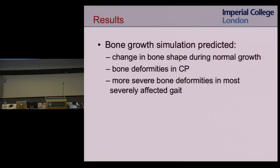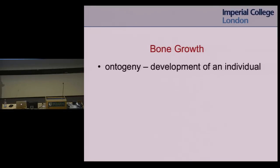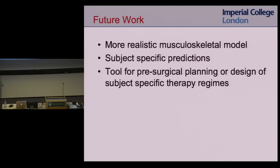We saw that in cerebral palsy walking, we would predict bone deformities. And the more severe the gait in that fourth child, we predicted higher, more severe bone deformities. This is ongoing work, and we're now working on developing a more realistic musculoskeletal model.